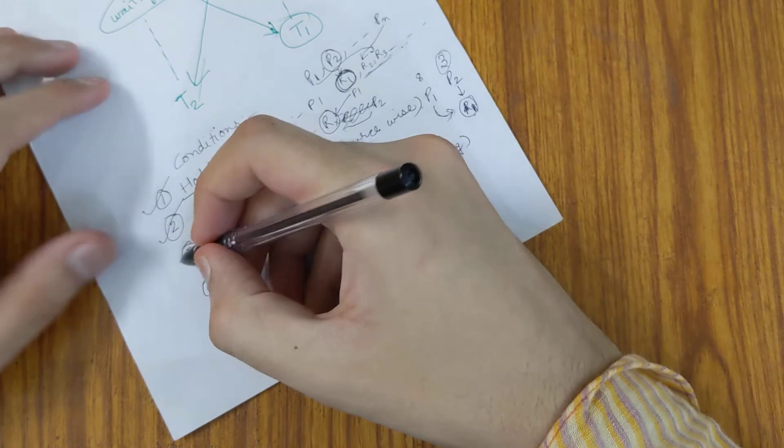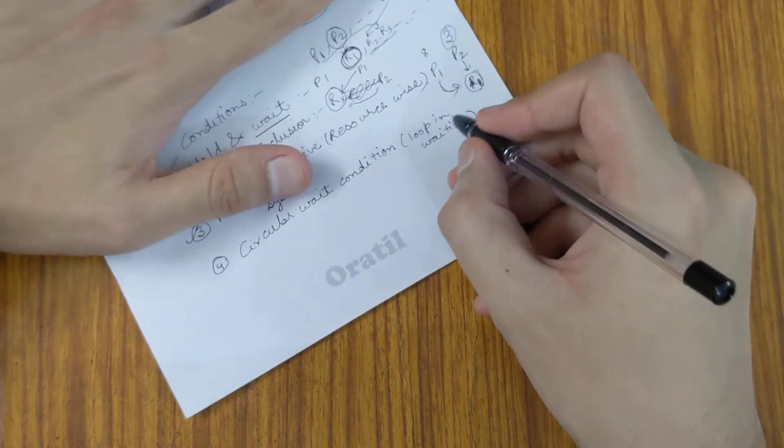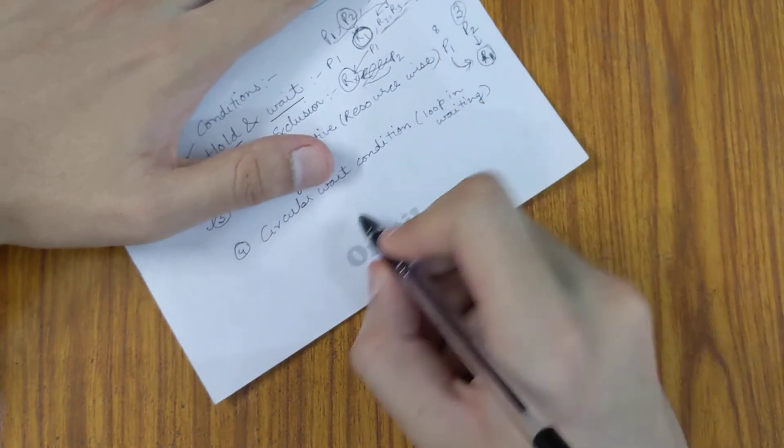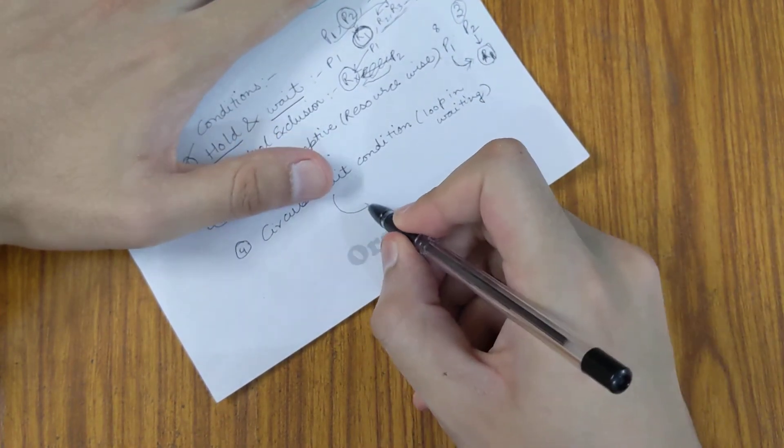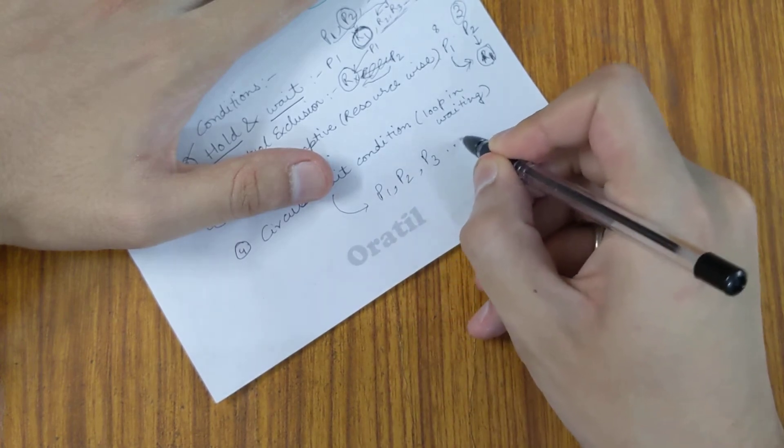The fourth condition, which is very important, is circular wait. We have to find a loop. Basically, let's say we have processes P1, P2, P3, up to Pn.